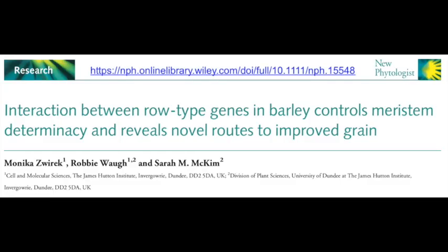On this Garnet Research Roundup, I'm delighted to be joined by Dr. Sarah McKeon, who works for the University of Dundee at the James Hutton Institute. We're going to be talking about a paper just published in New Phytologist, titled 'Interaction between Rho-type genes in barley controls meristem determinancy and reveals novel routes to improved grain.' Thanks for joining us, Sarah. It'd be great if you can give us a general overview about the paper.